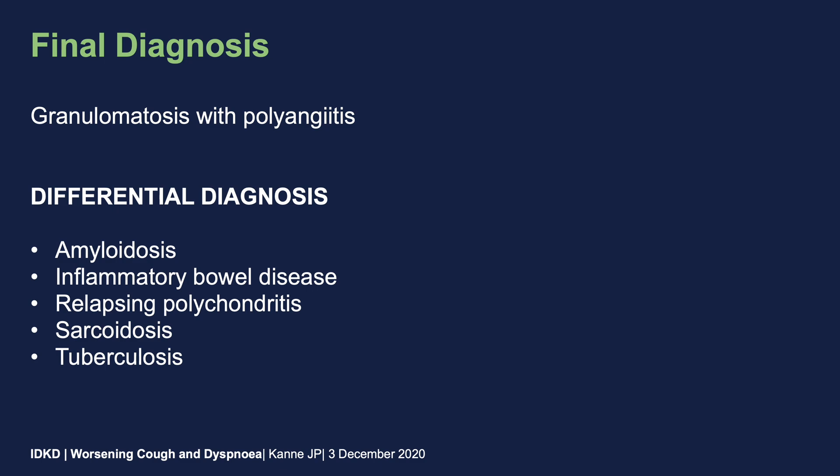Our final diagnosis is granulomatosis with polyangiitis. GPA is a small and medium vessel vasculitis that is part of the ANCA-associated vasculitides. It primarily affects the kidneys, the sinuses, and the lungs. Lung involvement most commonly includes lung nodules and masses, which may cavitate. Patients may develop consolidation from hemorrhage or vasculitis itself. Additionally, patients may have coexisting airways disease or disease isolated to the airways.